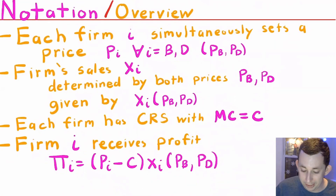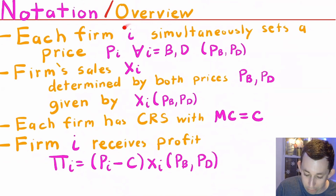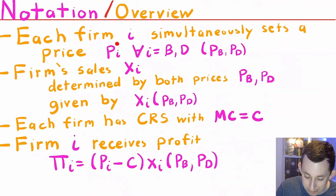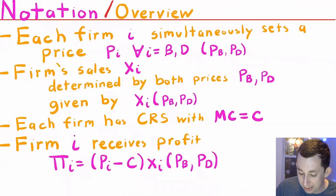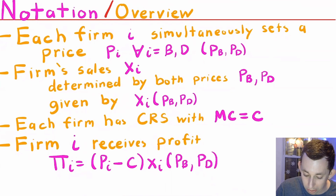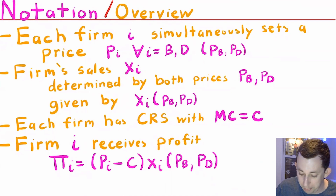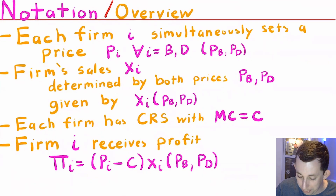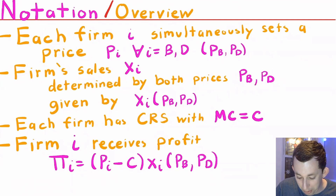When talking about the Bertrand model, it's important to go over some notation and an overview of the model. In the Bertrand model, you have two firms i — that's going to be Bill's Bakery or Dave's Delights — and they simultaneously set a price p sub i. Bill's price is p sub b, and Dave's price is p sub d. The number of pastries each firm sells is x sub i, so x sub b and x sub d, and those sales are determined by both their own price and their competitor's price: both p sub b and p sub d.